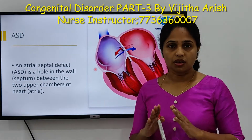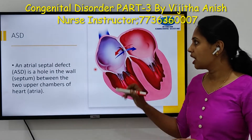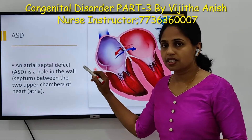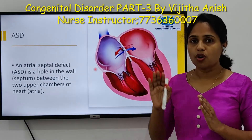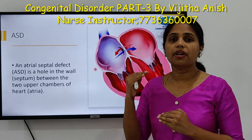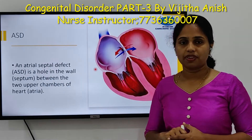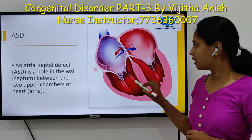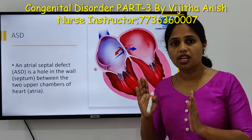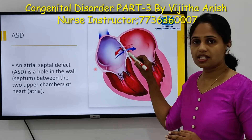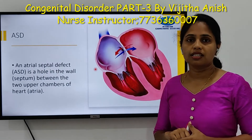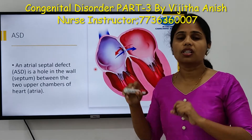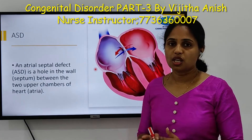Atrial septal defect is a congenital cardiac disorder in which a hole is found between the two atria. It is a hole in the wall between the two upper chambers, that is the two atria. Inside the heart there are four chambers — two atria and two ventricles. These chambers are separated by the atrial septum and ventricular septum. In ASD, a hole is created in the atrial septum.